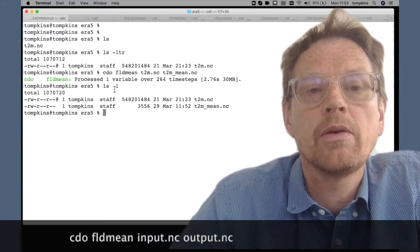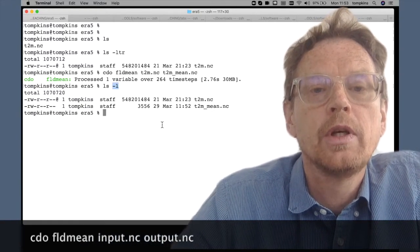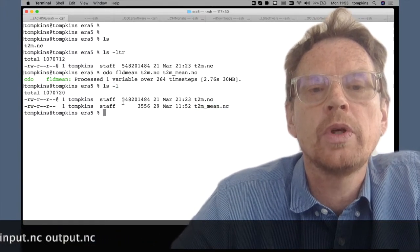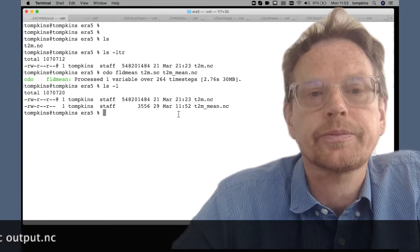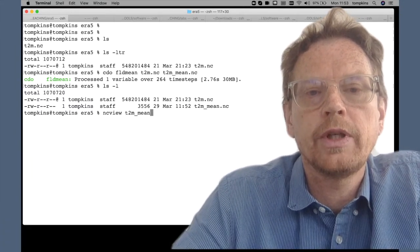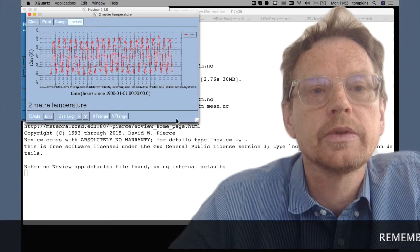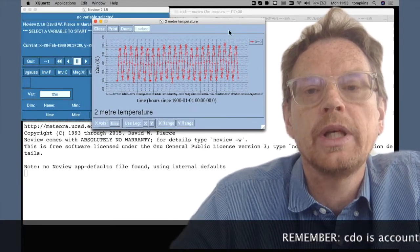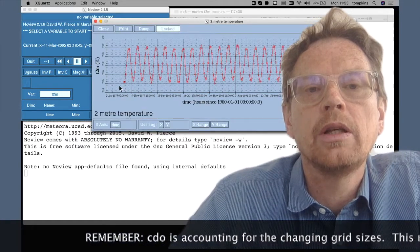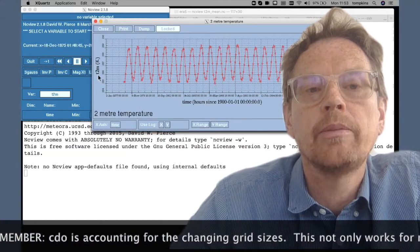I'm listing it in long form with minus l. We can see we have a second new file and the file size is much smaller than the original global file. Now if we look at this file using mc view, and there we have it, we have a time series of the global mean T2M temperature.